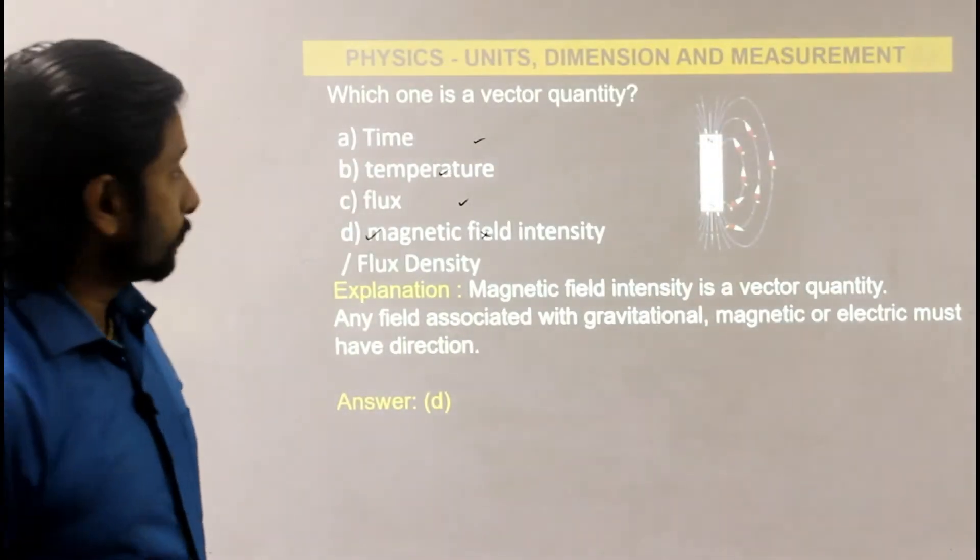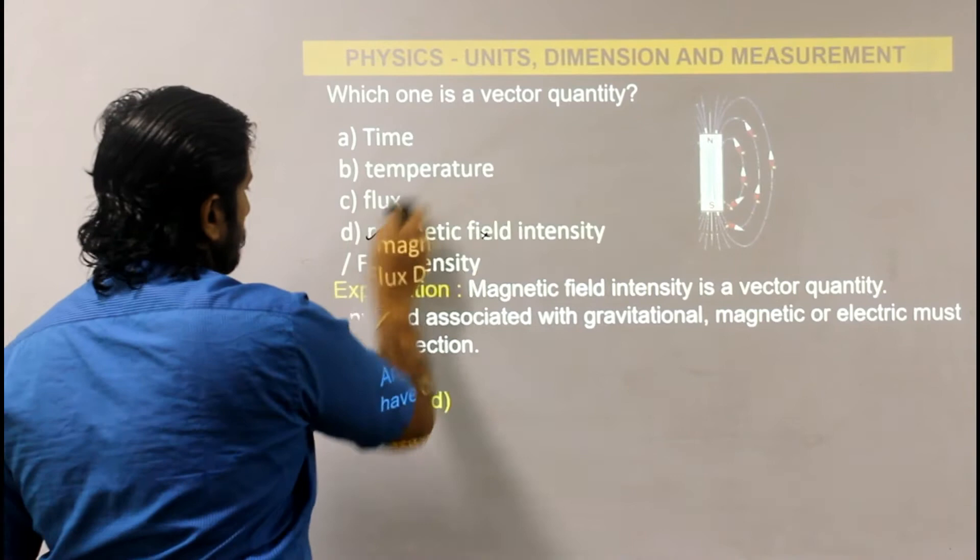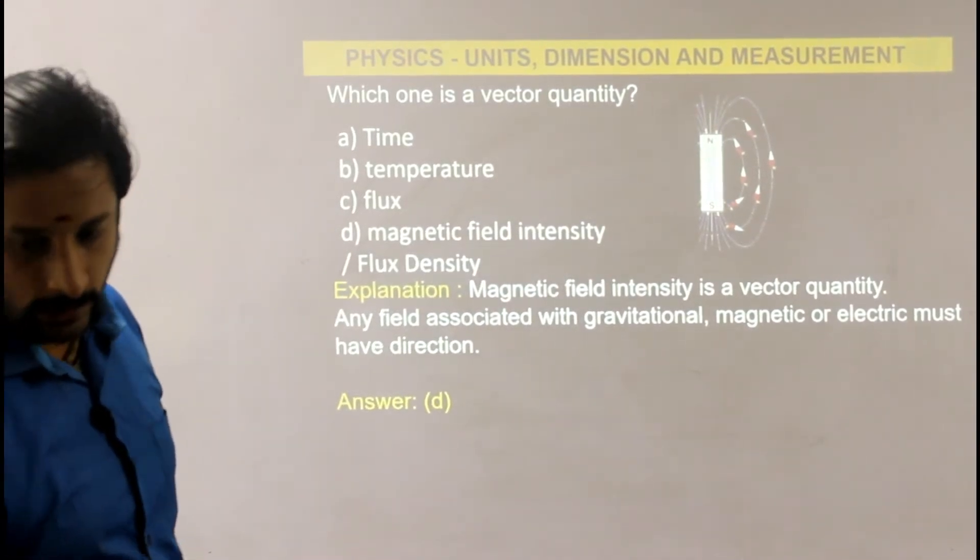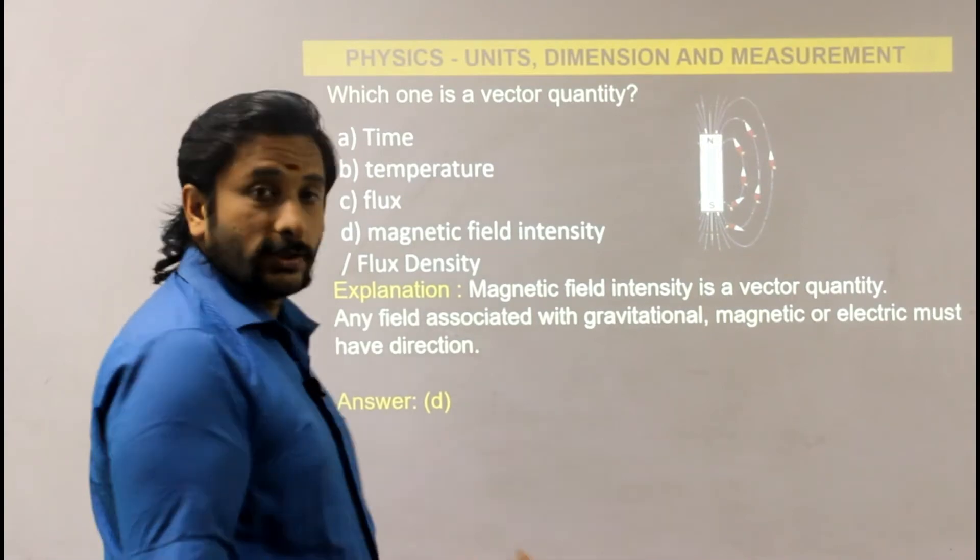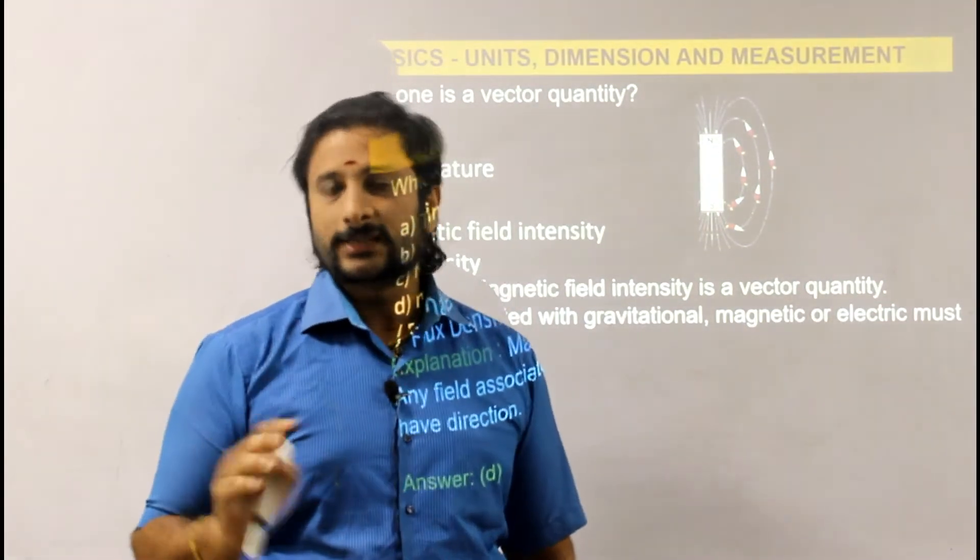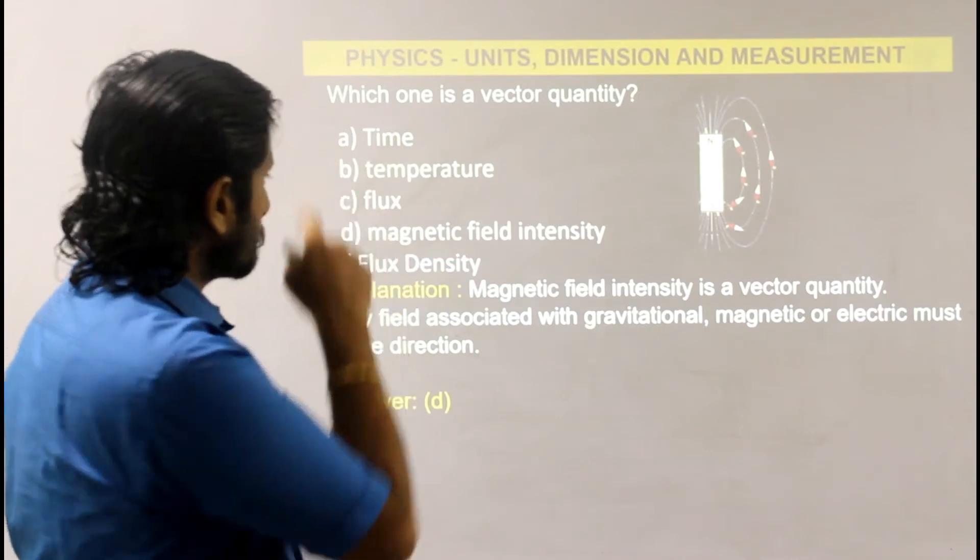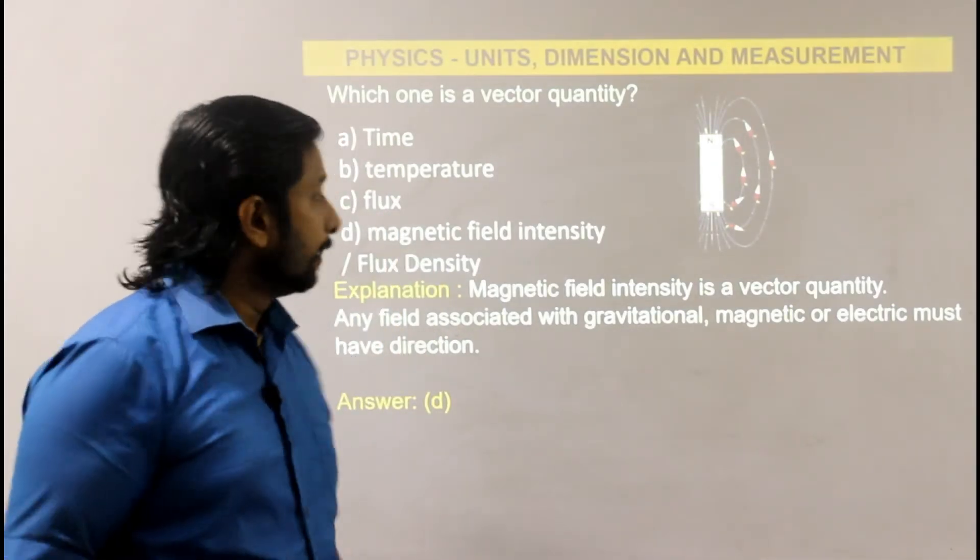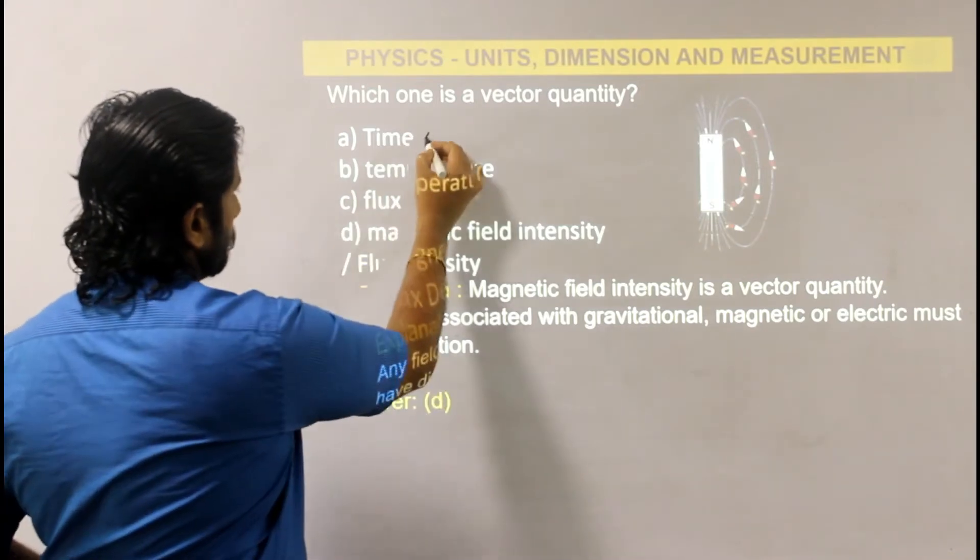Next question: which one is a vector quantity? A vector quantity should have direction. First one is time - it doesn't have direction. Temperature doesn't have direction.